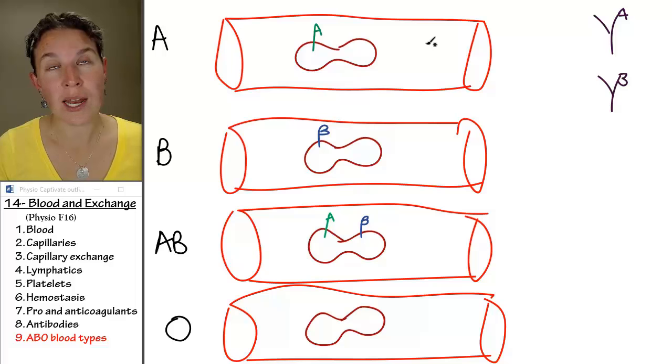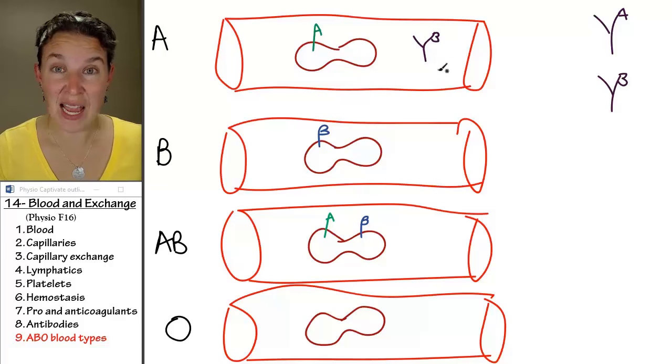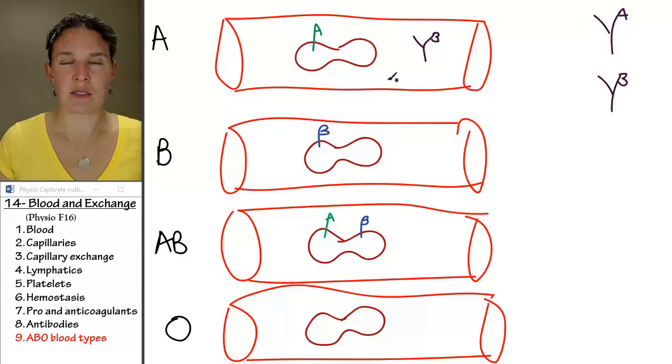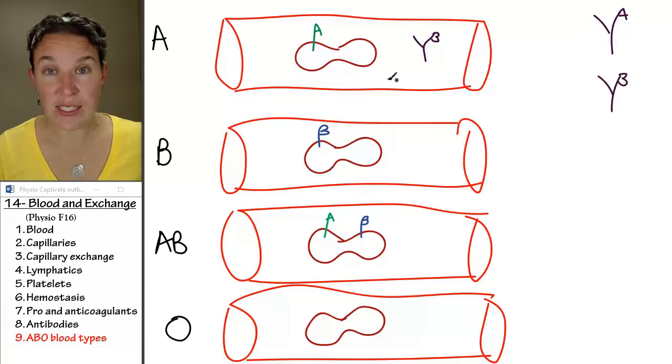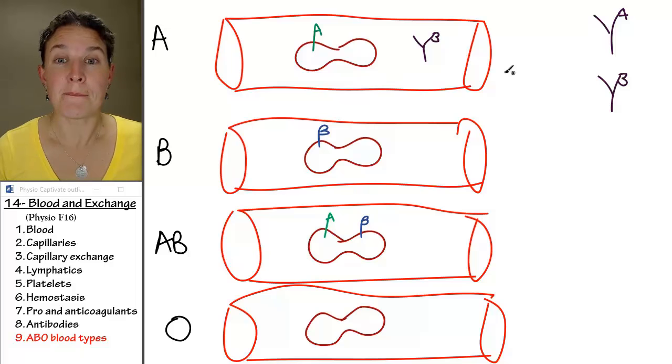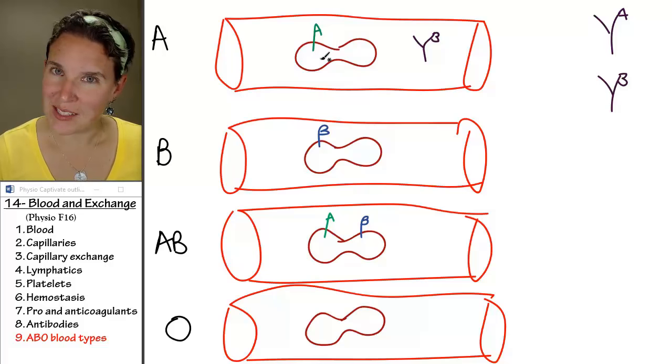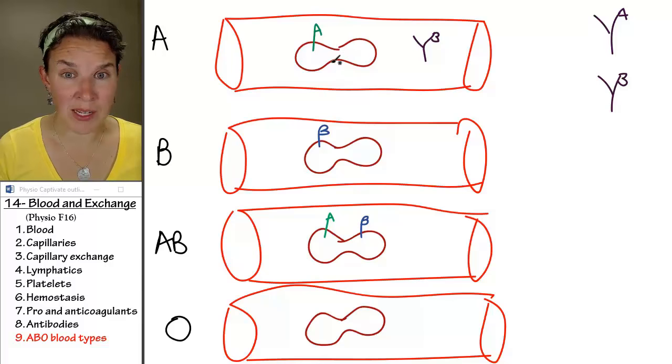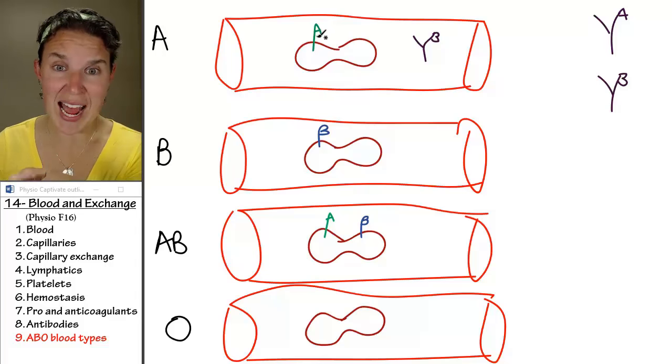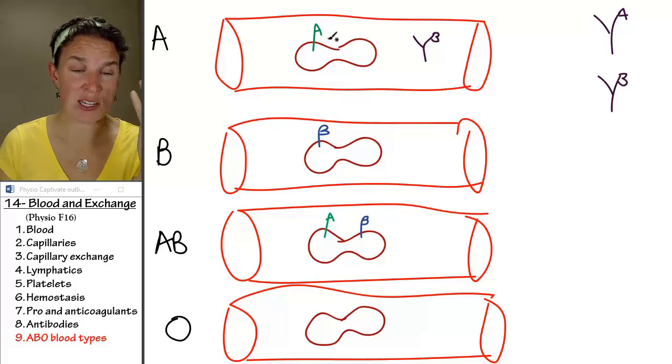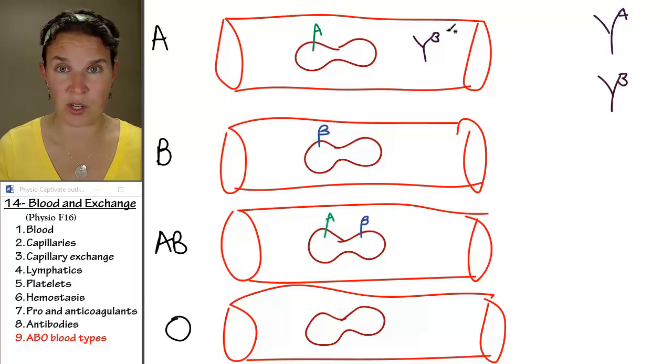Instead, what kind of antibodies do you think a type A blood person is going to have in their bloodstream? They actually have type B antibodies. Do they have any other antibodies? Yes, they've got jillions of antibodies. So don't be confused. There's jillions of them in there, but no type A antibodies, because if there were type A antibodies, we'd attack, combine, and initiate an immune response, and you would turn to mashed potato blood.